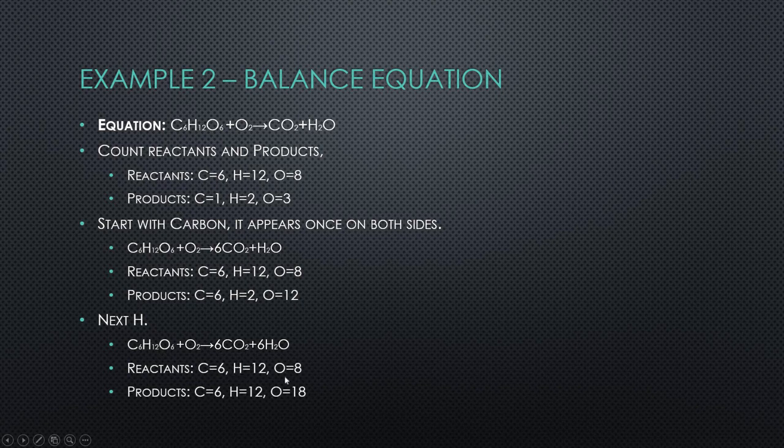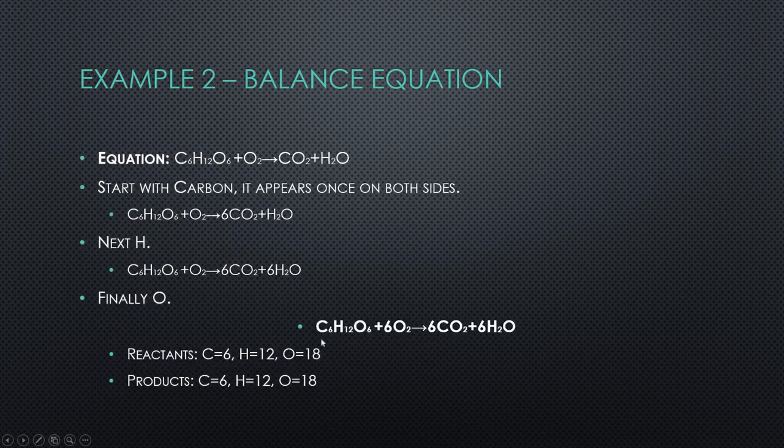The last step would be to balance the oxygens. So how would you balance the oxygen? You have 18 here, right? We already have 6 here, that means we only have to worry about this one oxygen here. What number can we put in front of it to get a total of 18? We already have 6, 6 plus 12 gives 18. So if you put a 6 here, we have the 2 oxygens, you multiply, and then you get the right answer. So this is the balanced equation.